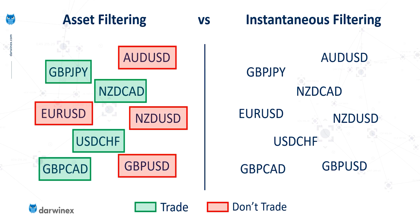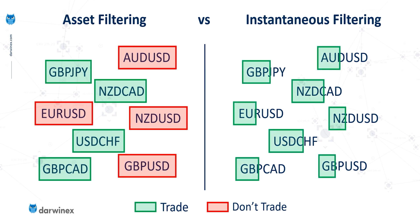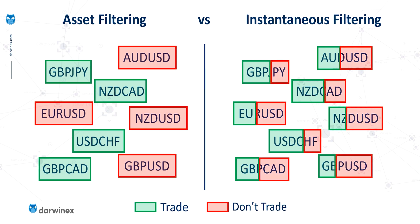But when using instantaneous filtering, this is different. Here we can trade a much wider range of assets, but only when those assets are experiencing the noise conditions that we require. At all other times, trading won't be allowed.